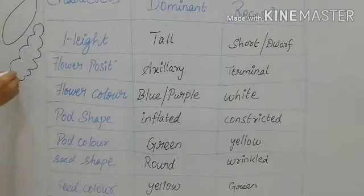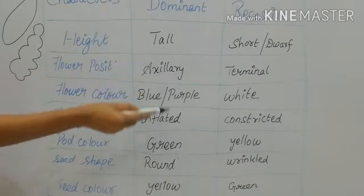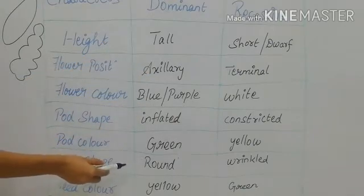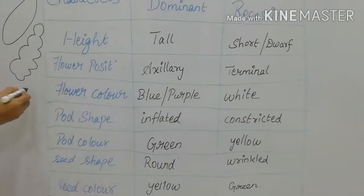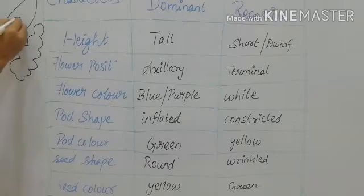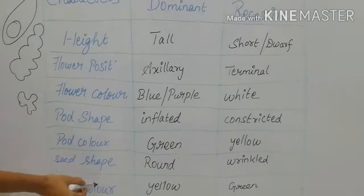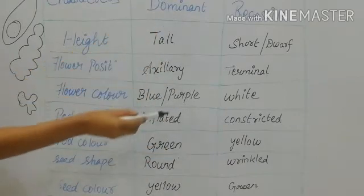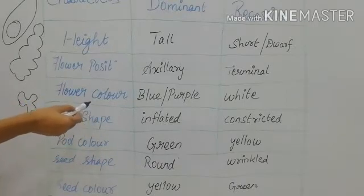The fifth character is the color of the pod — green color pod is dominant and yellow color is recessive. The sixth is seed shape — the shape of the seed inside the pod. If the seed color is yellow it is dominant, and if the seed color is green it is recessive. These are the seven contrasting characters that Mendel selected for his study.